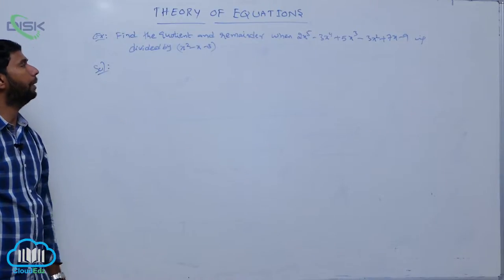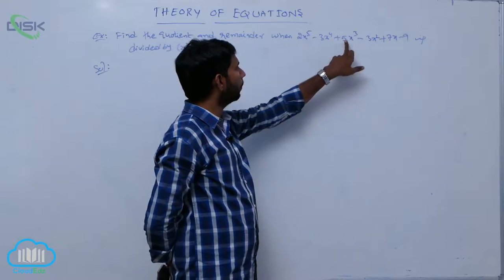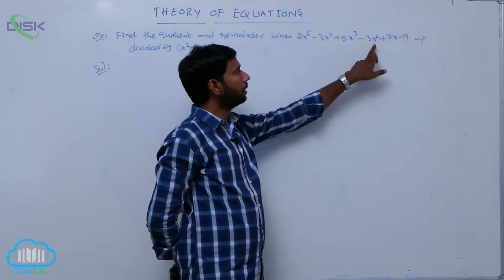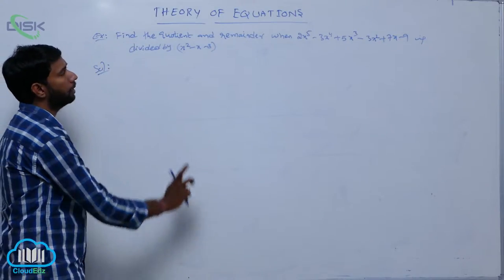In this example, find the coefficient and remainder when the polynomial 2x power 5 minus 3x power 4 plus 5x cube minus 3x square plus 7x minus 9 is divisible by x square minus x minus 3.